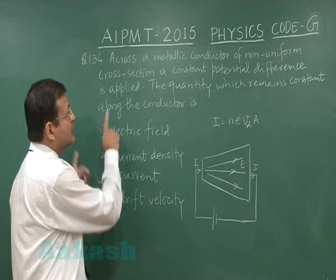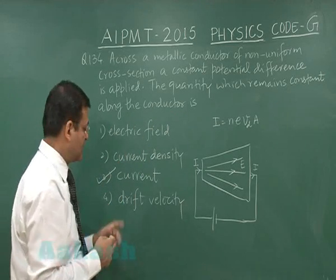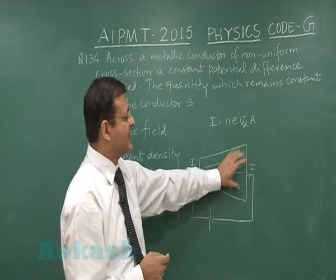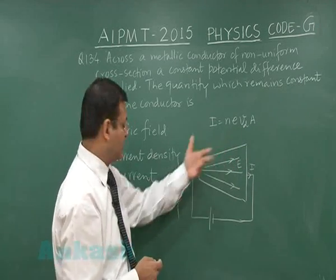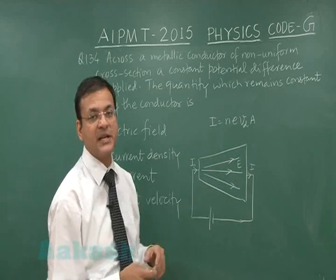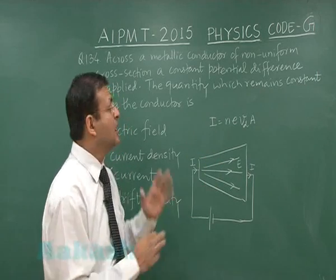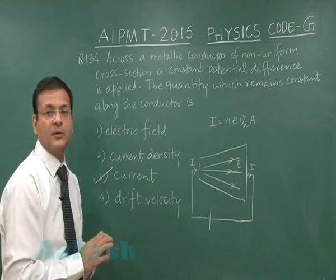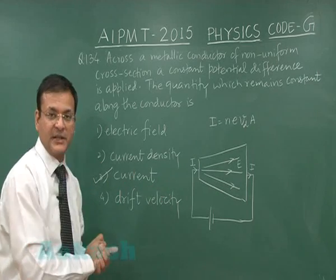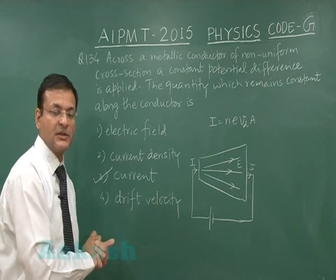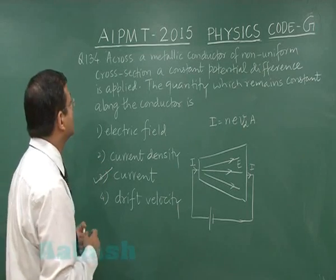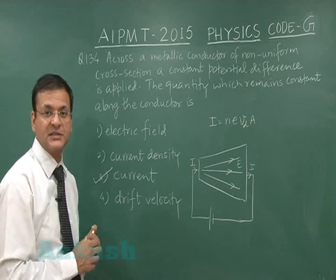The drift velocity is also less on the side with the larger cross-sectional area. But the question asks which quantity remains constant — and that is the current. So the correct answer is option 3: current. Now let us move to the last question, question 135 of the physics portion.